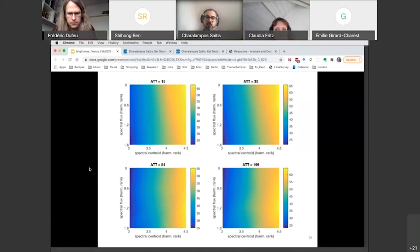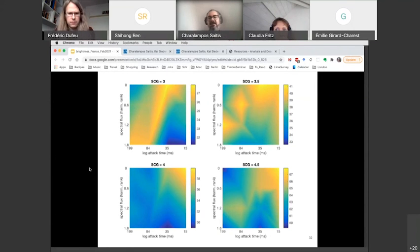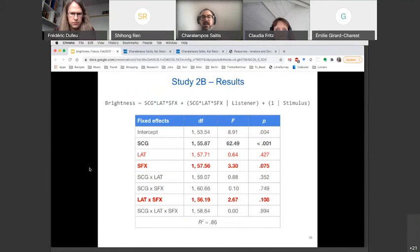When we modify flux and centroid at the four attack times, something interesting appears, but it's not very strong. And finally, the interaction between flux and attack time at the four different centroids is even more complex. And a mixed effects model showed some moderate effects for the spectral flux and the attack time, but they were not significant at the 0.05 level.